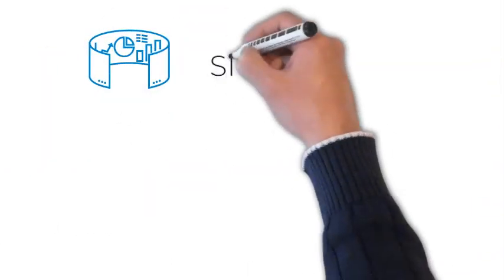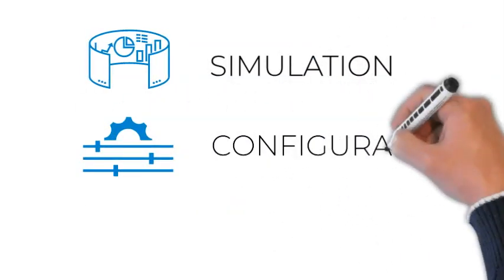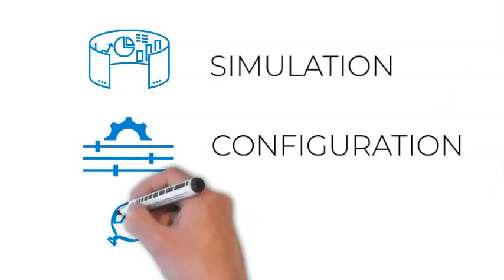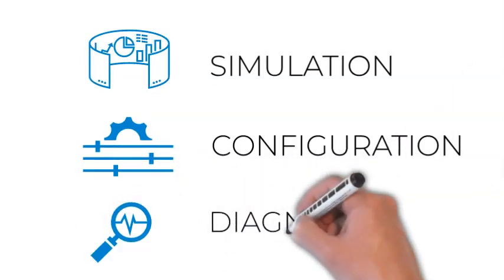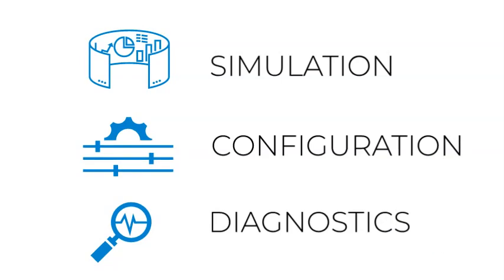TrackMaster offers three key components with intuitive interfaces for simulation, configuration, and diagnostics. The software enables a PLC interface to control SuperTrack's high-performance capability, allowing the user to create world-leading automation.